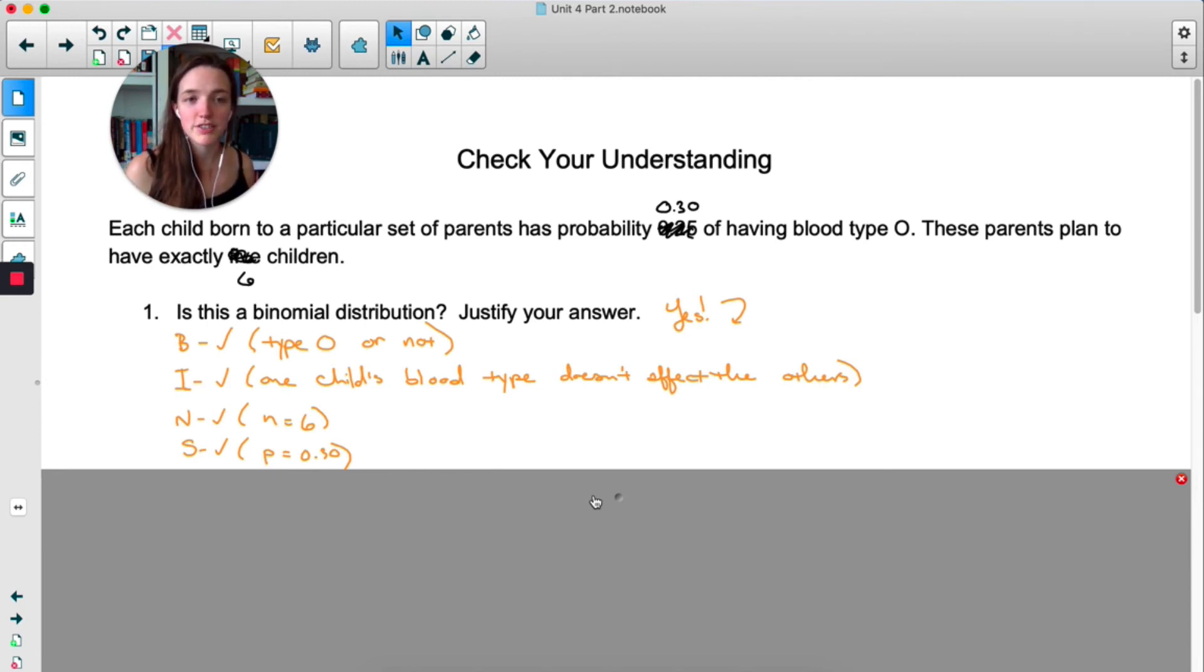We have a set number of trials. For some reason, this set of parents is convinced they're going to have exactly six kids. I don't know why. And the success of having a type O blood kid is 0.3. Once again, I don't know if that's actually possible or true. It just fit this example, so we're going with it.